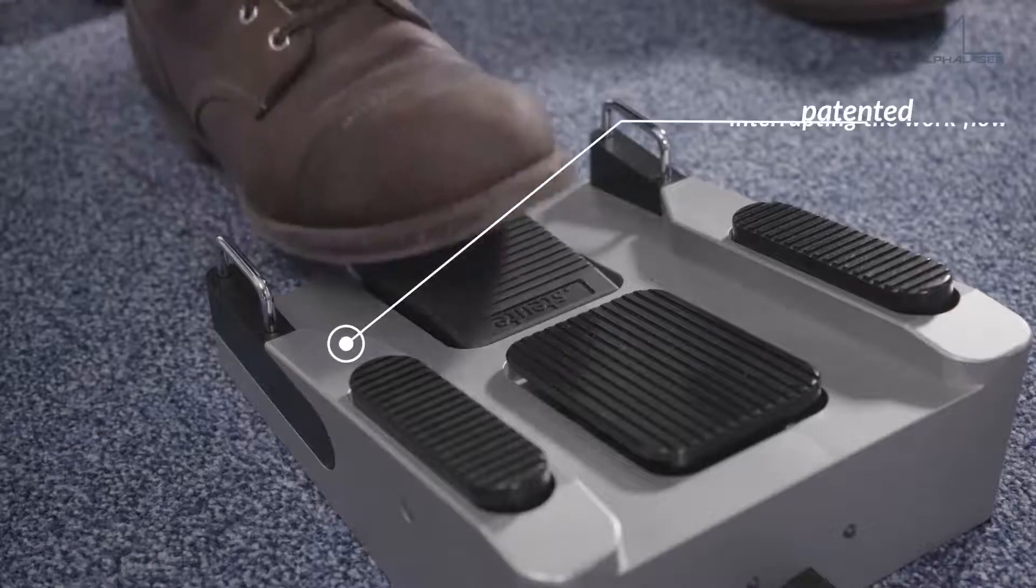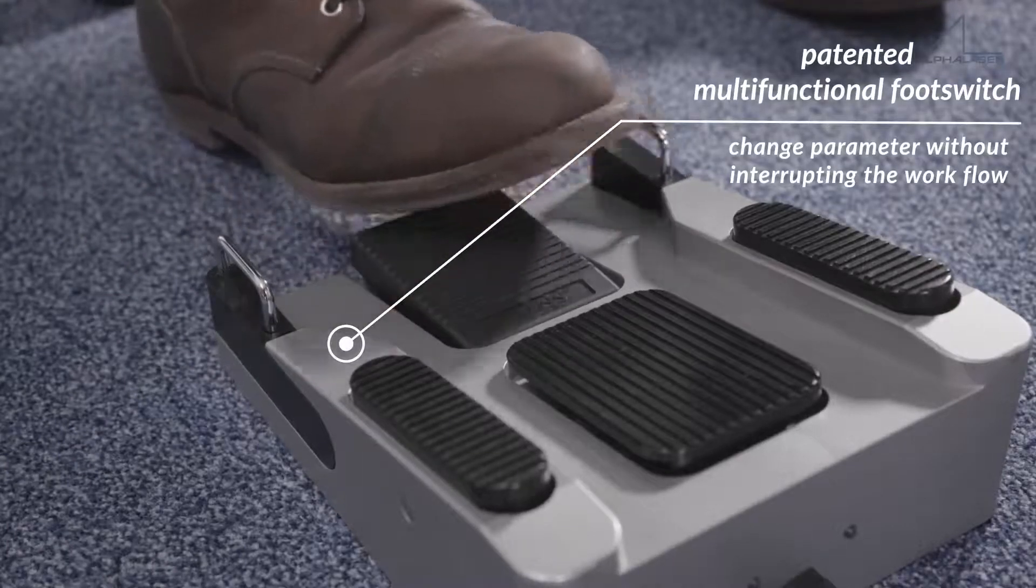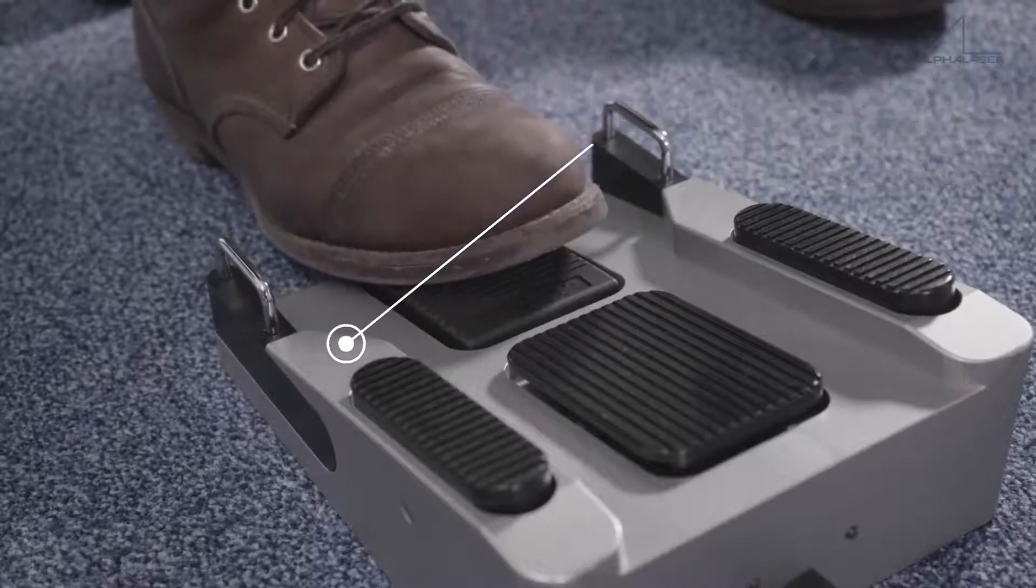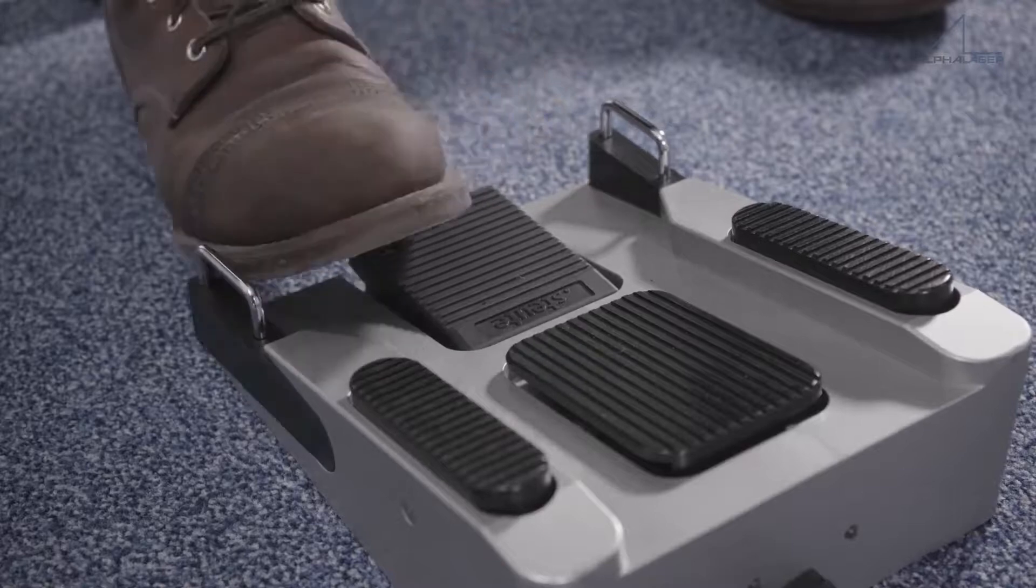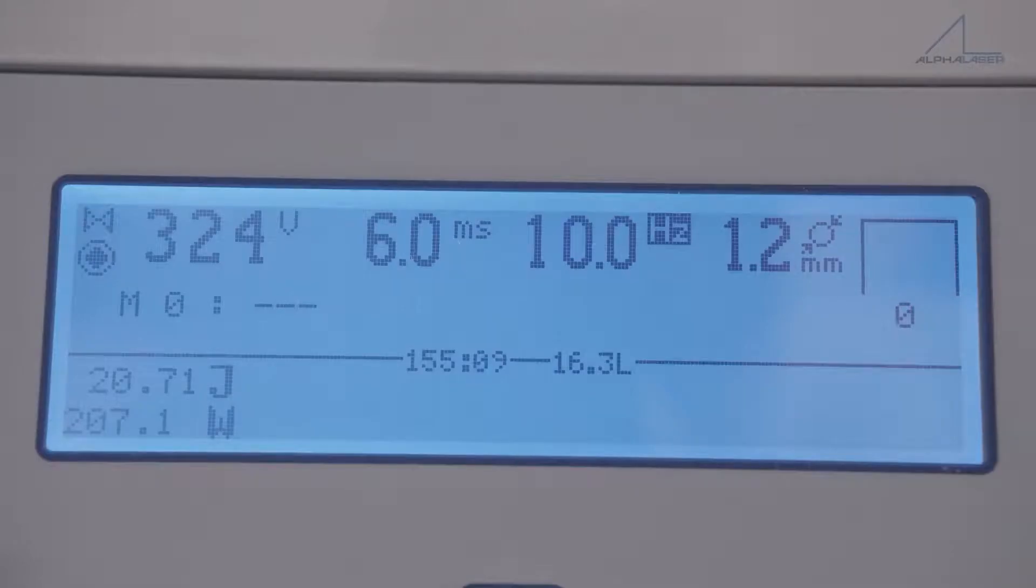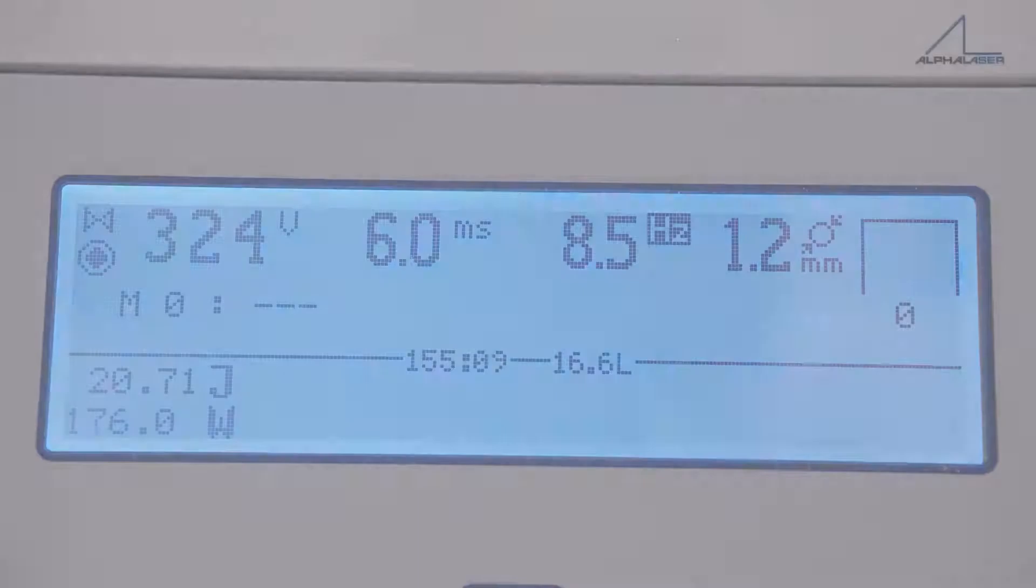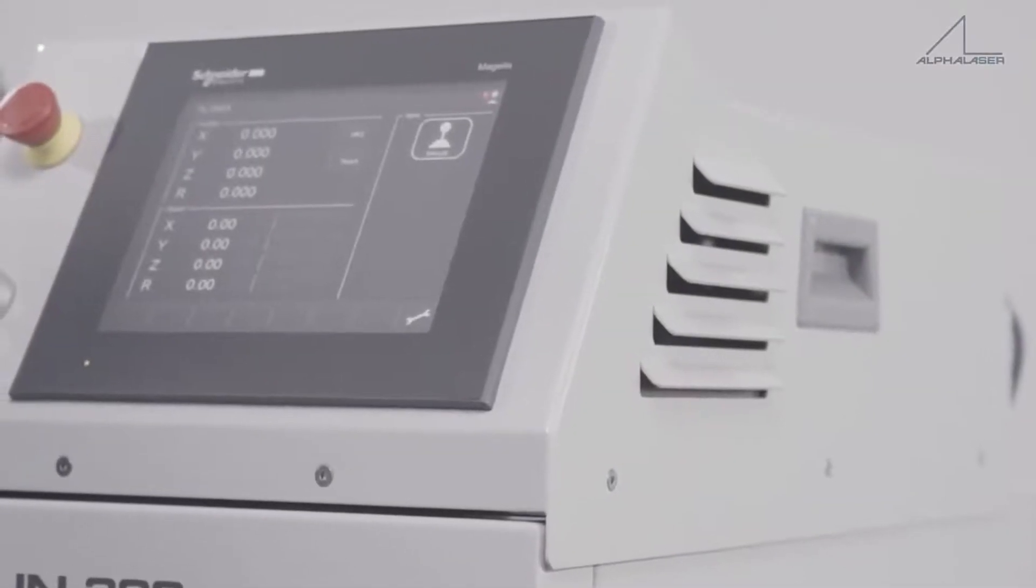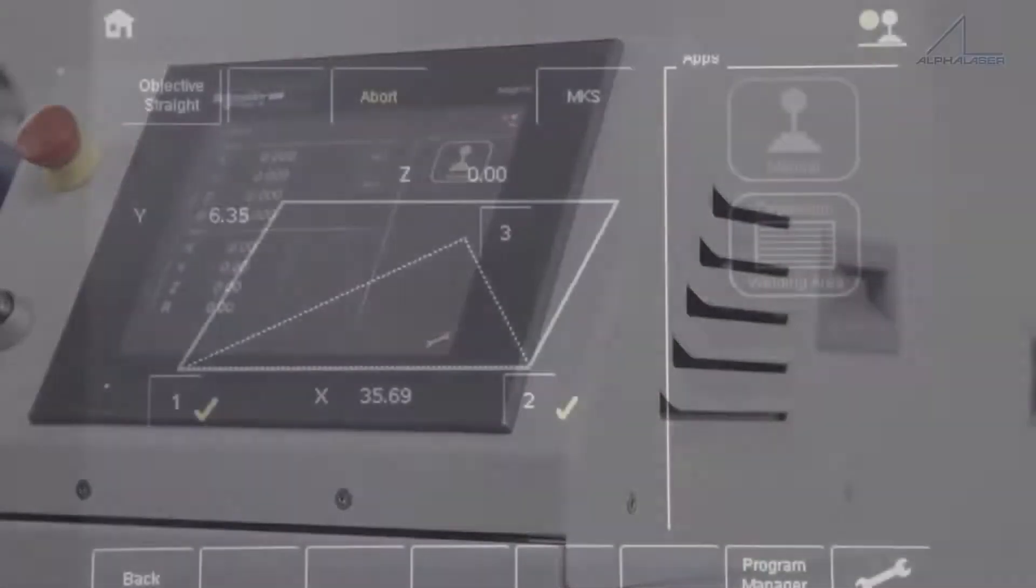With the patented Alpha Laser multifunctional footswitch, all relevant laser parameters such as voltage, pulse length, pulse repetition rate, and the welding spot size diameter can be adjusted without interrupting workflow.